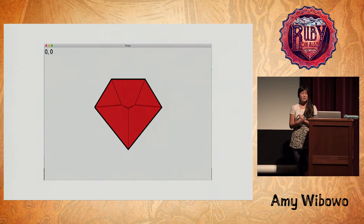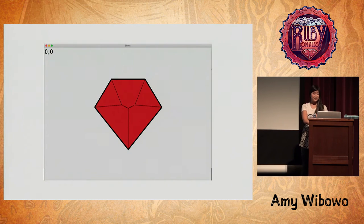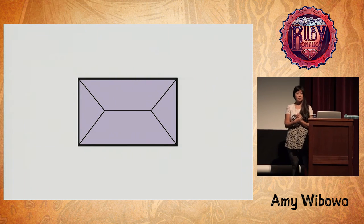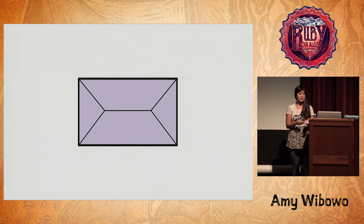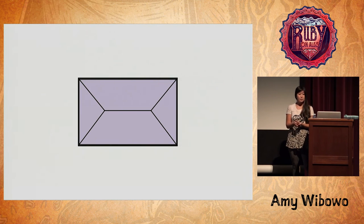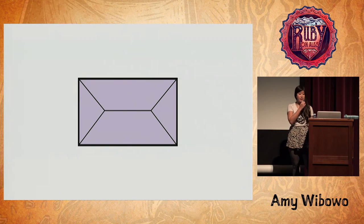Why do we need more folds? We'll need to get a little deeper into computational folding theory to answer this question. Here is a simple example of why the straight skeleton isn't fully sufficient: this is the straight skeleton for a rectangle. If we tried to fold along those lines, we'd see that they just don't fold into a flat shape, and we need the piece of paper to be flat before we can make our single cut.